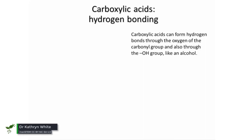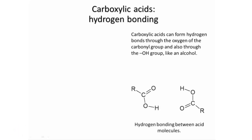The acid functional group is able to form hydrogen bonds both through the OH group, like an alcohol, and through the carbonyl oxygen, like a ketone or an aldehyde. So in liquid carboxylic acids, this means that the molecules can orient themselves in pairs, forming two hydrogen bonds that bind the pair together.